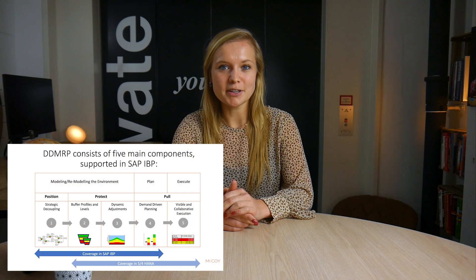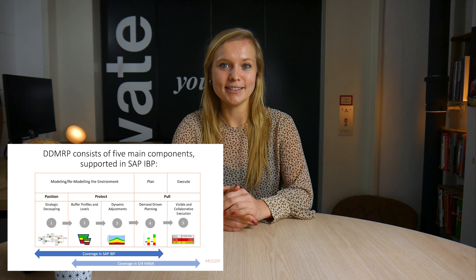DDMRP uses the actual demand to drive replenishment through a decoupled supply chain, in contrast to MRP and ERP that use demand forecasts. Strategic decoupling points are used to drive supply order generation throughout a supply chain. I will explain DDMRP by going through the five core components and how these components are covered in sub-IBP.